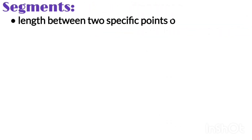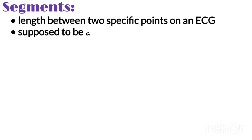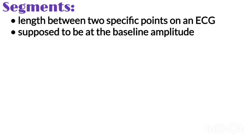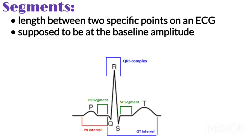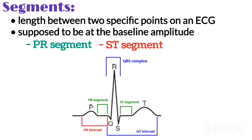Third is the segment — the length between two specific points on an ECG that is supposed to be at the baseline amplitude, not negative or positive. The segments on an ECG include the PR segment, ST segment and TP segment.